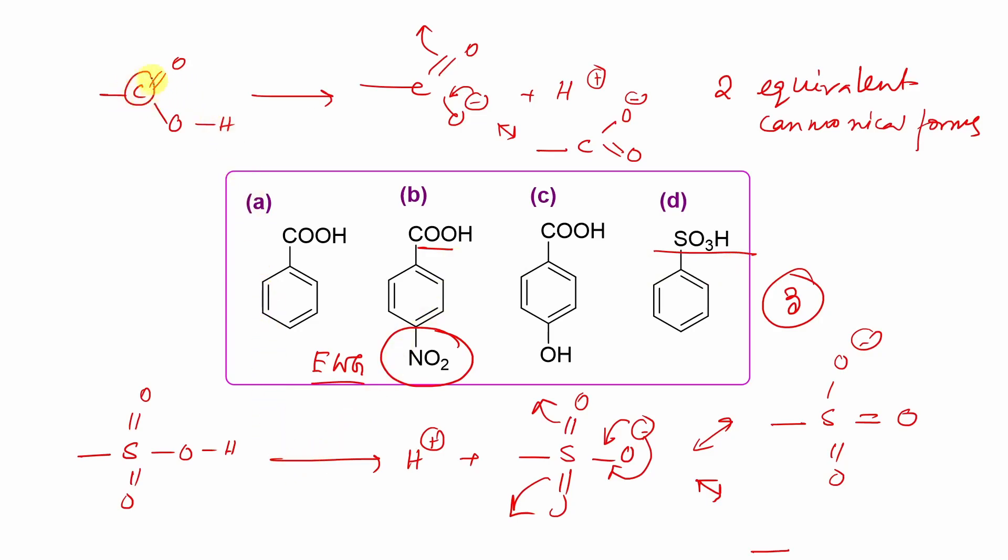Because if you look, in carboxylic acid there is carbon. It is neither electronegative nor electropositive. Whereas here, it is sulfur. It is actually electronegative. That is the reason for this enhanced acidity of sulfonic acid.